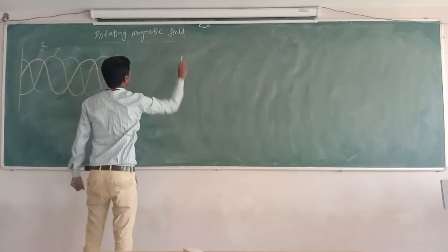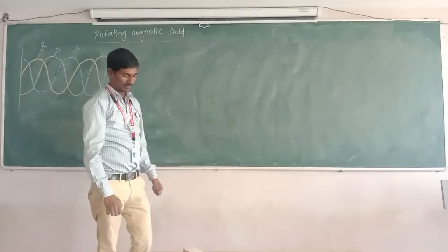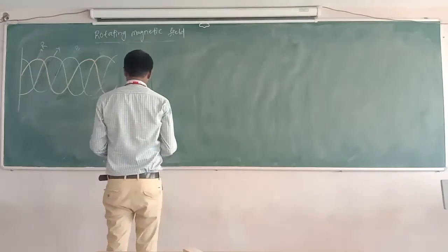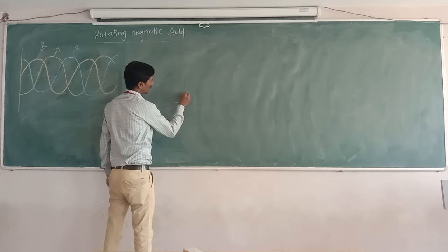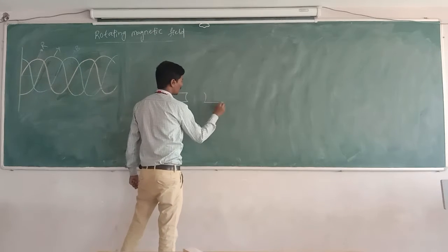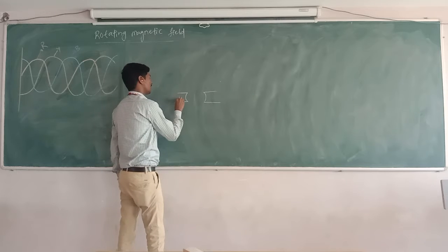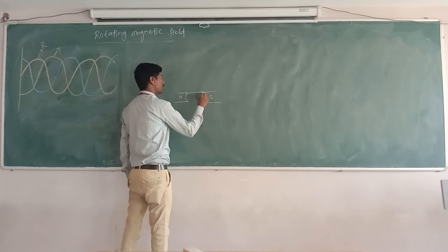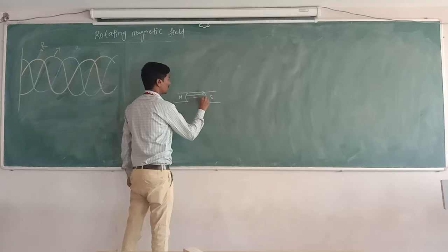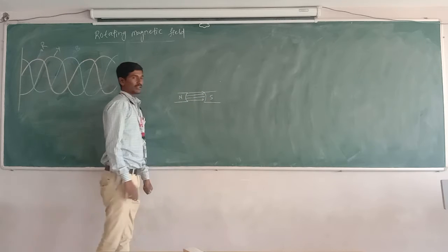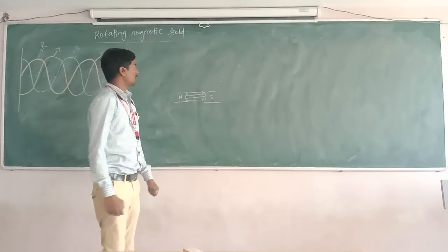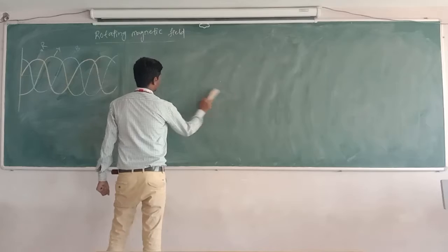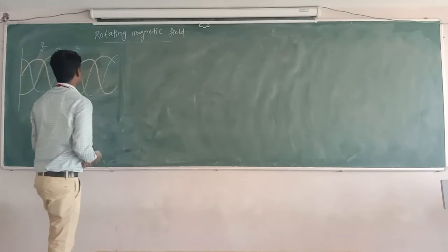Rotating magnetic field. This rotating magnetic field will exist in the induction motors. When coming into the DC motors, there will be, for example, two poles — North Pole and South Pole. The magnetic field will be taking place in between North Pole and South Pole. The magnetic field lines will be linear, that is straight. But when coming into the rotating magnetic field, the magnetic field will be rotated.